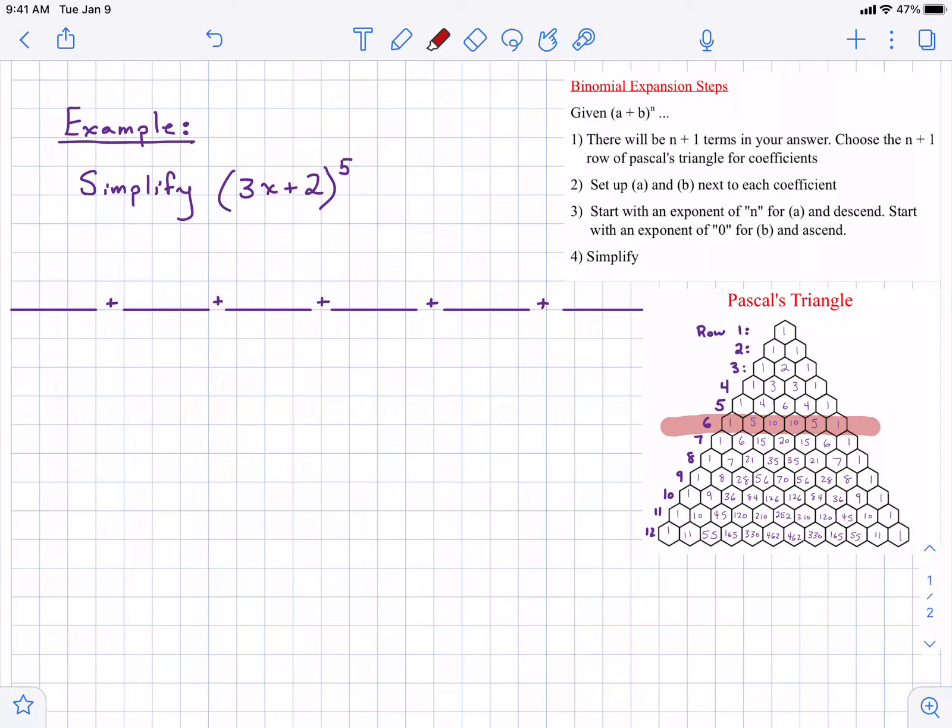The first thing we're going to do is record our coefficients from the sixth row of Pascal. That's 1, 5, 10, 10, 5, 1.